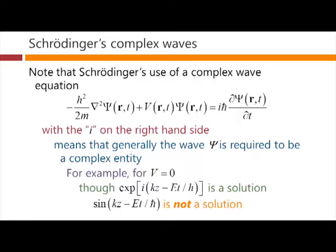For the classical wave equation, a sine wave could be a solution. But in the case of Schrödinger's equation, because of the introduction of the imaginary number i, although the complex wave is a solution, a corresponding simple real wave is not a solution of the equation. So far it seems we're just making our lives more complicated — we're not going to use the most obvious wave equation, and we are forcing ourselves to use complex waves, which seems a significant price to pay.